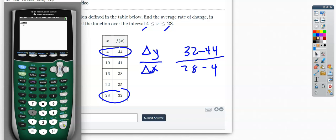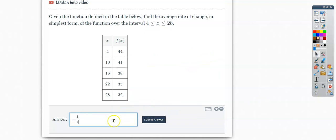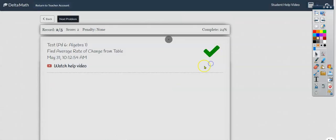And 32 minus 44 and 28 minus 4. And negative 1 half. We'll type that here, negative 1 half. And that's it.